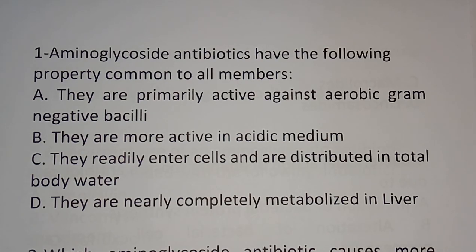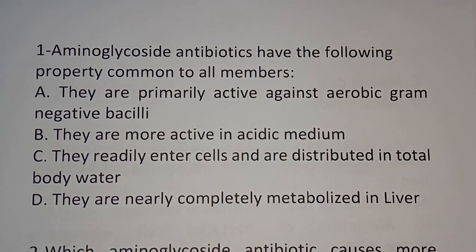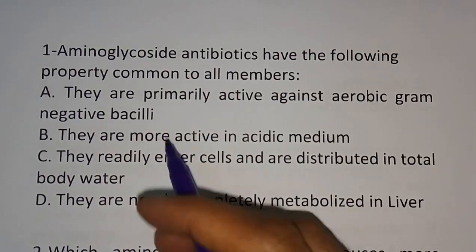The others — Streptomycin, Gentamicin, Kanamycin, Tobramycin, Sisomycin, and Netilmycin — all come under Systemic Aminoglycoside Antibiotics. So to summarize: Topical Aminoglycosides are Neomycin and Framycetin. Now we will move to the first question of the video.